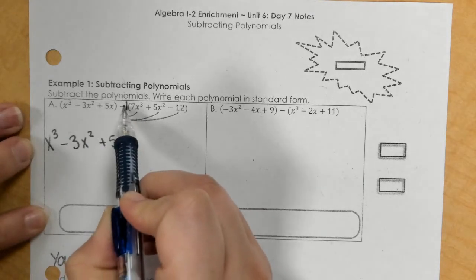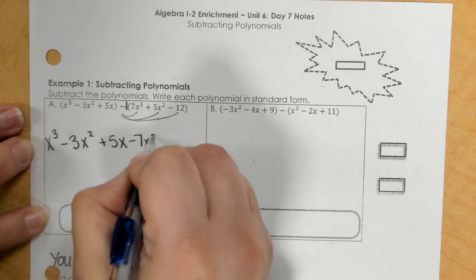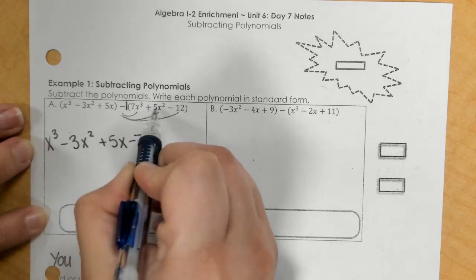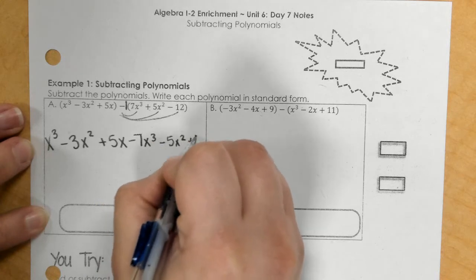But here I need to change. So negative 1 times 7 makes that negative 7x to the third. And then I would make that a negative 5x squared. And then a positive 12.